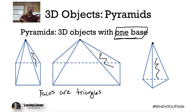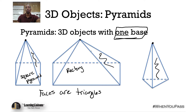Remember, we still name the pyramid according to its base. So this would be a square pyramid, this would be a rectangular pyramid, and then we have a triangular pyramid.